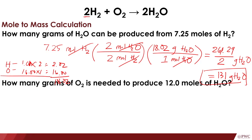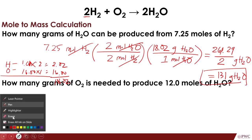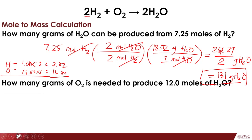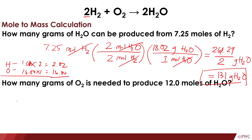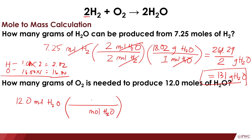Let's have another problem: how many grams of O₂ is needed to produce 12 moles of H₂O? It's the same pattern — the given is 12.0 moles of H₂O. First, apply the molar ratio from moles of H₂O to moles of O₂. For the numbers, look at the balanced chemical equation: for H₂O the coefficient is 2, and for O₂ the coefficient is 1, so that's 1 mole of O₂.